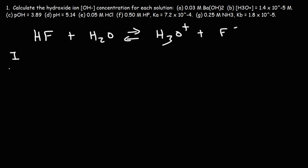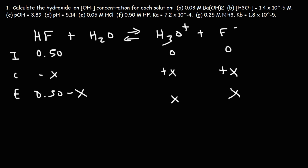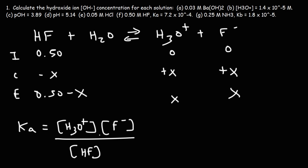Let's make an ICE table: Initial, Change, Equilibrium. Initially we have 0.50 M of HF. Water is a liquid so we don't need to include it. The products start at zero, so the reaction shifts right — products increase by X and reactants decrease by X. At equilibrium we have those values. The acid dissociation constant Ka equals the concentrations of H₃O⁺ times F⁻ divided by HF. We don't include liquids or solids in the equilibrium expression.